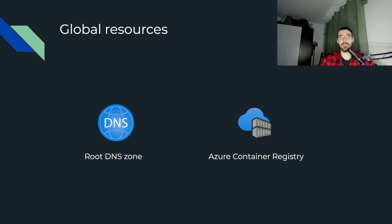Breaking this lump of resources into subcategories, I figured we could split them in two. The first category would be global resources, which means you only need to deploy these once, and then no matter how many instances of the application you want to deploy, they could service these global resources. In this category, we have the root DNS zone — something like mydomain.com — and the Azure Container Registry where we will keep our Docker images.